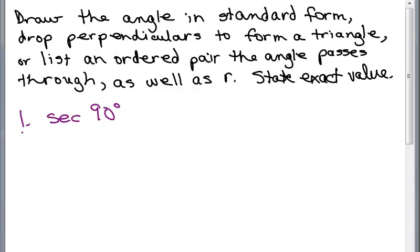So here's our first problem, secant of 90 degrees. So the first thing is to draw the angle in standard form. So in standard form, we have the XY plane here. And we start with the X axis and we're going to go up all the way. It's going to end up on the Y axis here. So the angle in standard form is right here. That's 90 degrees.